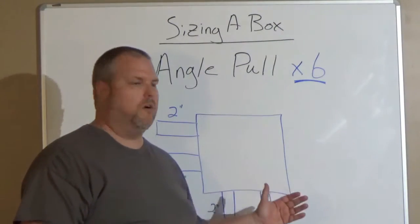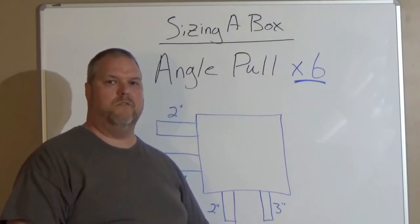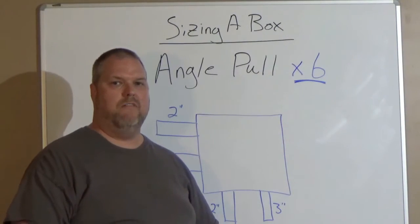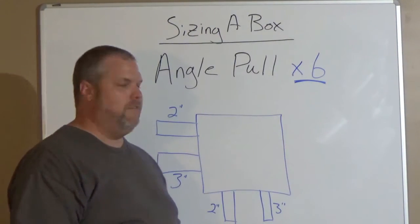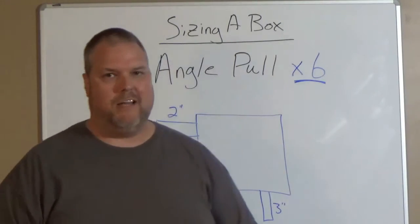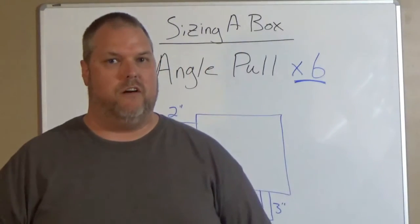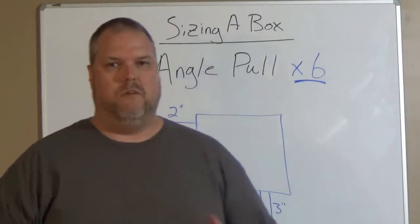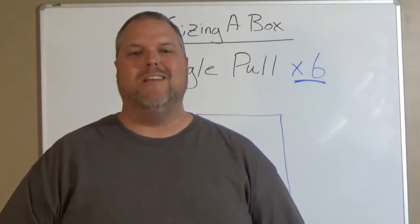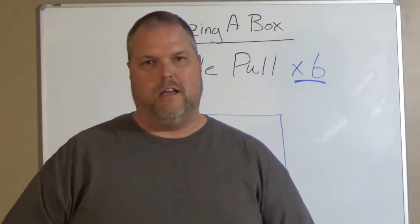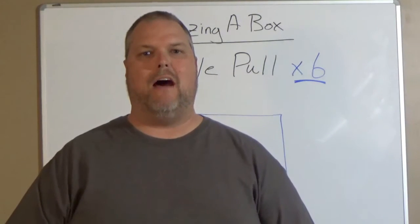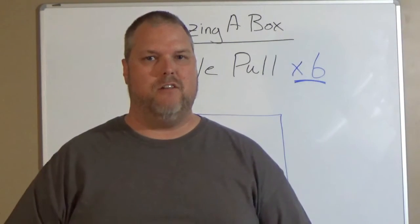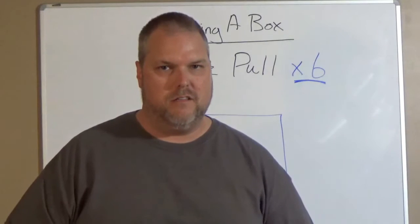What if I have multiple conduits? Let's say I have two conduits going into a junction box. I have a 3-inch conduit and I have a 2-inch conduit. Again, something that we do very commonly. Remember the rule.